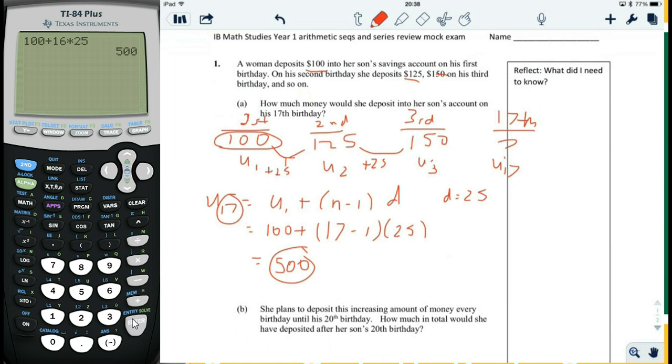How do we know we're supposed to use the U formula and not the S formula? Because how much does he get on his 17th birthday? It's not a total of his first to the 17th birthday, it's just on his 17th birthday. So the answer is $500. Now let's go to the next one.